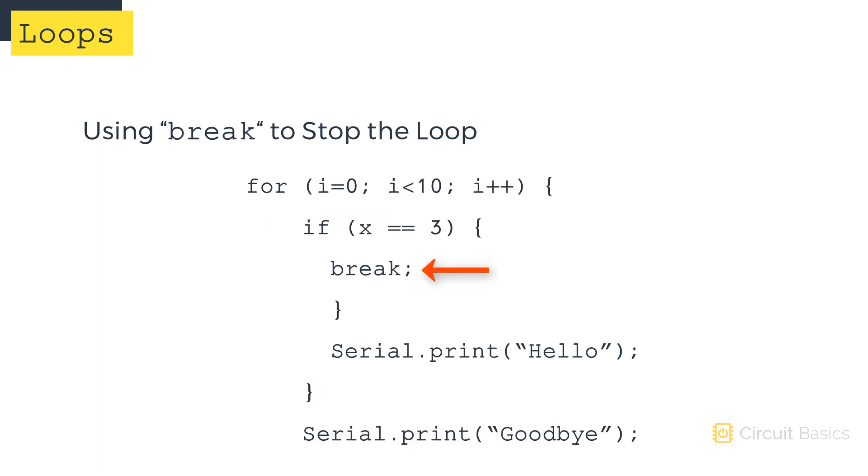You can exit a loop at any point with the break keyword. The break keyword causes the program to exit the loop immediately. It works with while loops, do while loops, and for loops. It's just another way to control the behavior of your loop.